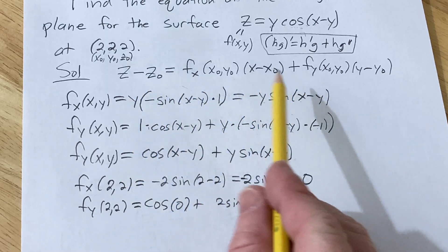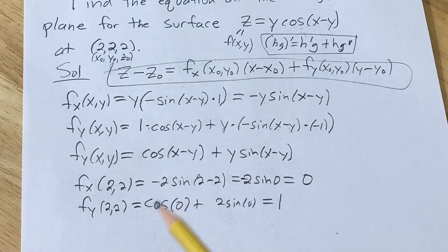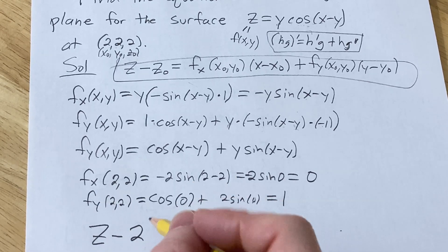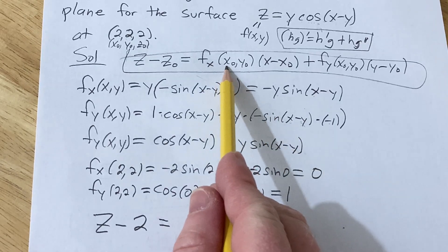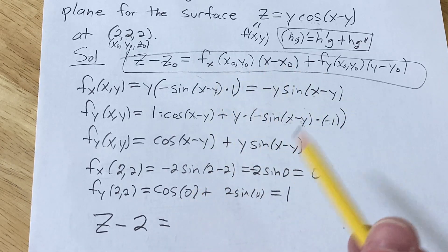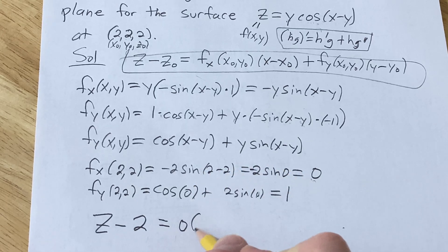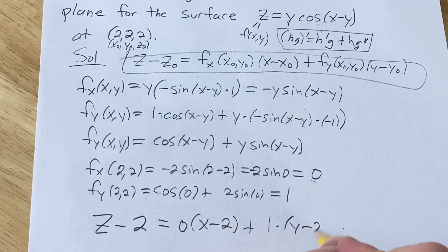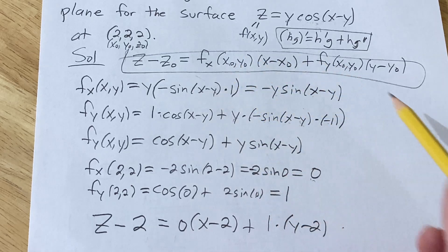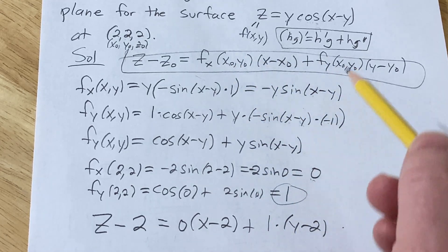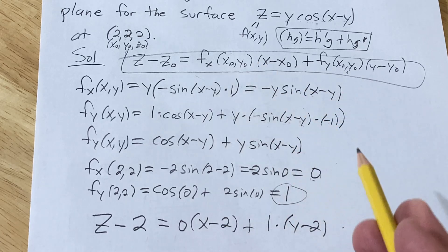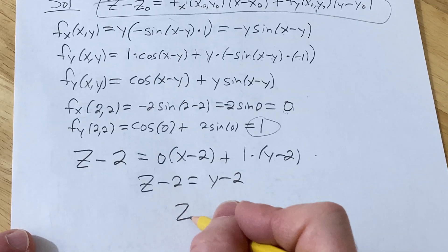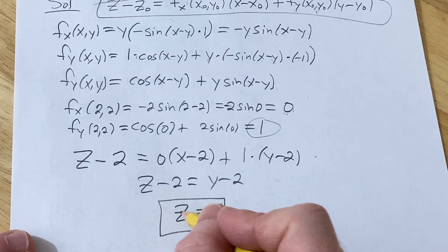Now we plug everything into our formula. So it'll be z minus 2 — because our z-naught is 2 — equals fx at (x-naught, y-naught), which is 0, times x minus 2, plus 1 times y minus 2. Since the fx term is 0, this simplifies to z minus 2 equals y minus 2. Adding 2 to both sides, the answer is z equals y.